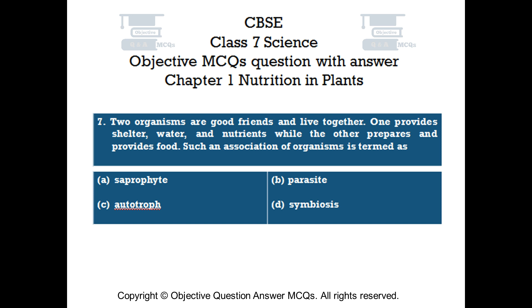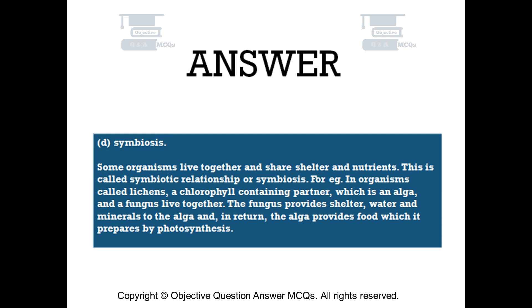The right answer is option D: symbiosis. Some organisms live together and share shelter and nutrients — this is called a symbiotic relationship or symbiosis. For example, in organisms called lichens, a chlorophyll-containing partner (an alga) and a fungus live together. The fungus provides shelter, water and minerals to the alga, and in return the alga provides food which it prepares by photosynthesis.